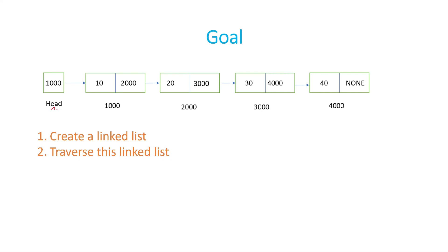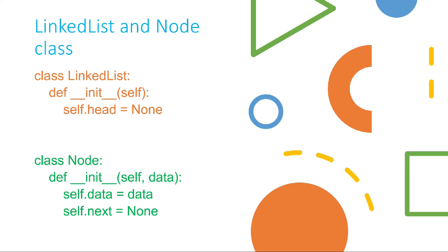Let's concentrate on creating a linked list — just a linked list as you can see in this diagram. The one thing which is very important in a linked list is the head. If you know the head, you will be able to have the complete linked list. That's how we are creating this class: the first definition is class LinkedList, and in its constructor we create an instance variable head — self.head — and initialize it with None.